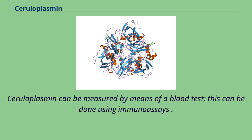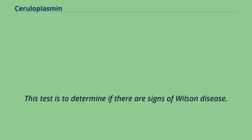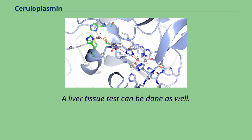Ceruloplasmin can be measured by means of a blood test using immunoassays. The sample is spun and separated, and stored at around 4 degrees Celsius for three days. This test is done to determine if there are signs of Wilson disease. Another test that can be done is a urine copper level test, which has been found to be less accurate than the blood test. A liver tissue test can also be performed.